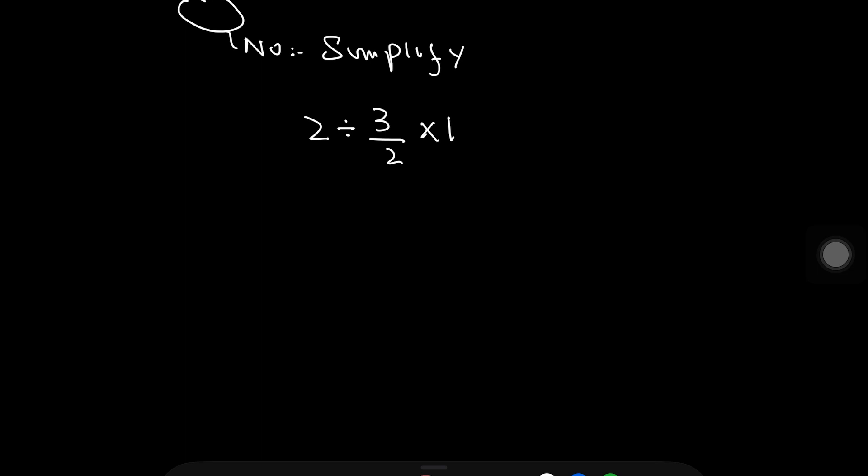To solve the problem 2 divided by 3 upon 2 multiplied by 1, we start from left to right and this will give the correct solution.